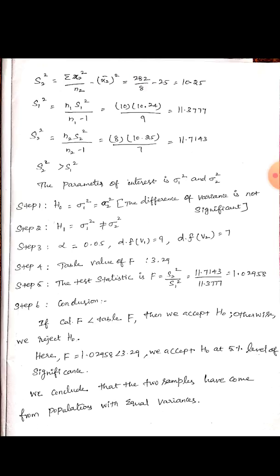Then capital S2 square: the formula is N2 times s2 square divided by N2 minus 1, the degrees of freedom for diet B sample 2. Substituting, N2 minus 1 equals 7, and the value is 11.71. Now compare the variances.